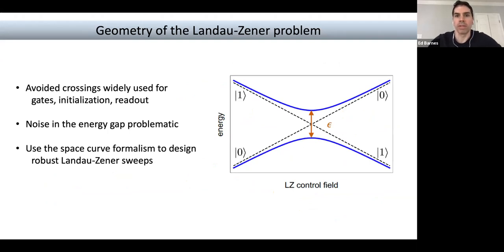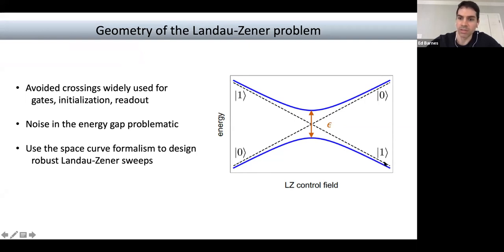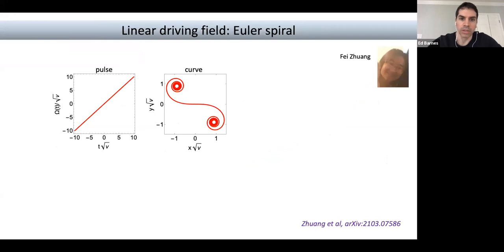As a quick example, consider the Landau-Zener problem — a two-level system with an avoided crossing where the gap is due to a noise parameter epsilon representing coupling to the environment. The standard goals are to either start on one side in the ground state and traverse to the ground state on the far side, or use the avoided crossing to perform a gate operation by accumulating phase. Noise in the avoided crossing can degrade these operations, and we can apply this formalism to counteract that effect.